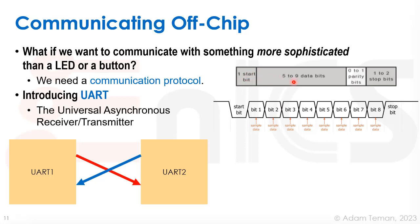UART is a slow and simple serial protocol. Each frame has a start bit, data bits (typically one byte, sometimes longer), parity bits, and stop bits. The line is normally held high (idle). To start a transmission, the transmitter pulls the line low for one cycle (start bit), then transmits all eight data bits one after the other, then pulls it back high for at least one cycle as the stop bit.